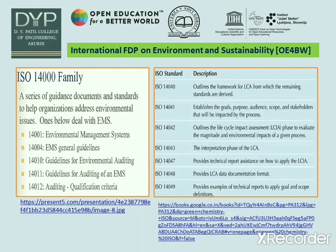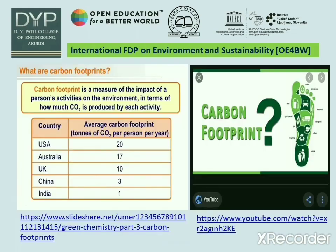The ISO 14001 family is a series of guidance documents and standards to help organizations address environmental issues. Particularly, ISO 14001 covers environmental management systems; 14004 covers general guidelines for EMS; 14010 covers guidelines for environmental auditing; 14011 covers guidelines for auditing of an EMS; 14012 covers auditing qualification criteria, along with a few other ISO standards given in this slide. These standards are specifically for environmental sustainability.